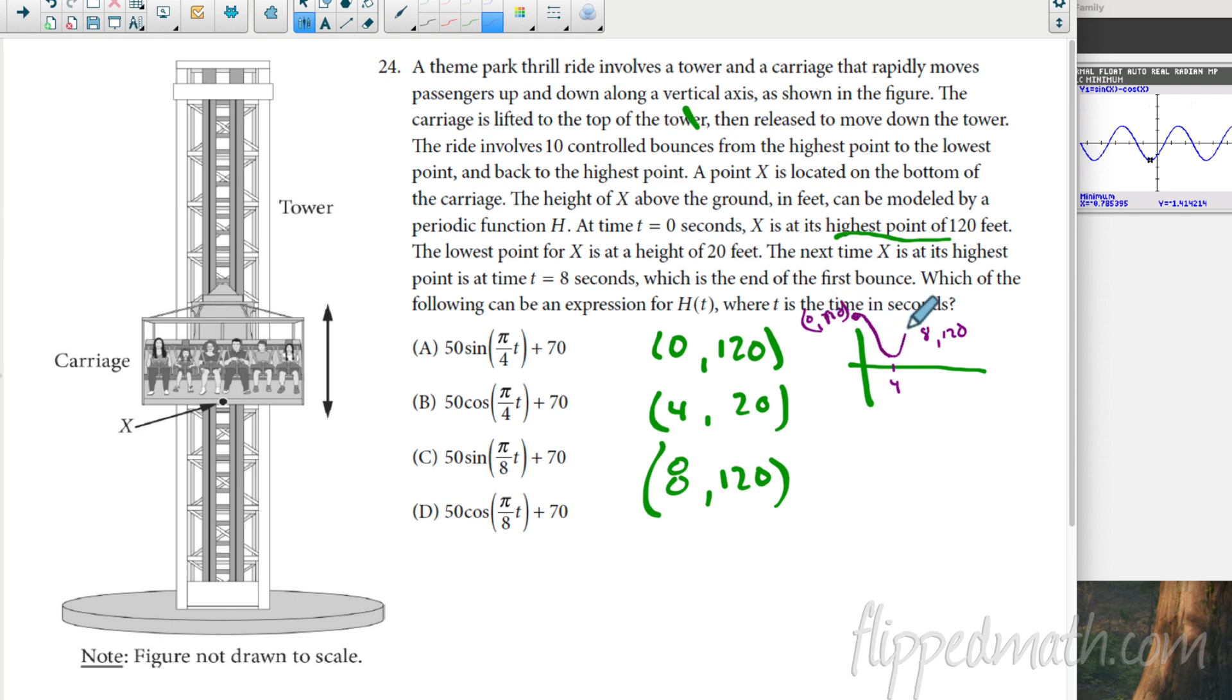This looks exactly like a cosine curve. I hope that's a choice. Cosine curve. Now we just need to figure out the period here is eight. We need to figure out the value of B. So the period, remember, equals 2π over B. And we know the period is eight because that's how long it takes to get from a maximum to another maximum. So we're going to say that eight, that's the period equals 2π over B. So if I were to solve for B, I'm going to multiply both sides by B and then I'll divide by eight and I'm going to get B is going to equal 2π over 8, which is π over 4.